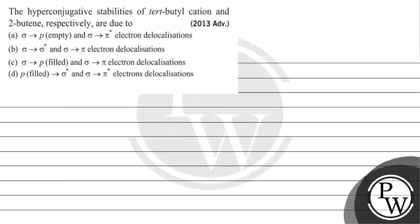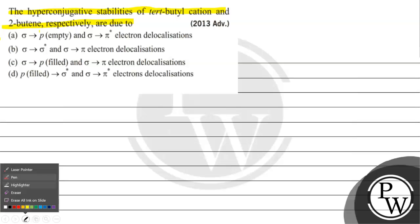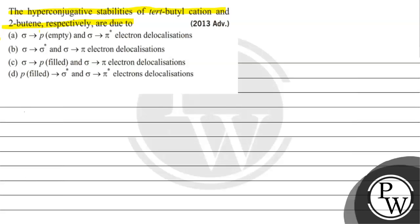Hello, let's read this question. The question says: the hyperconjugative stabilities of tertiary butyl cation and 2-butene respectively are due to — options are given to us, right?